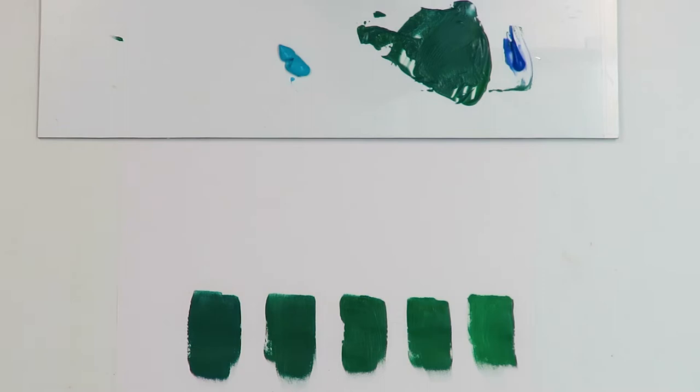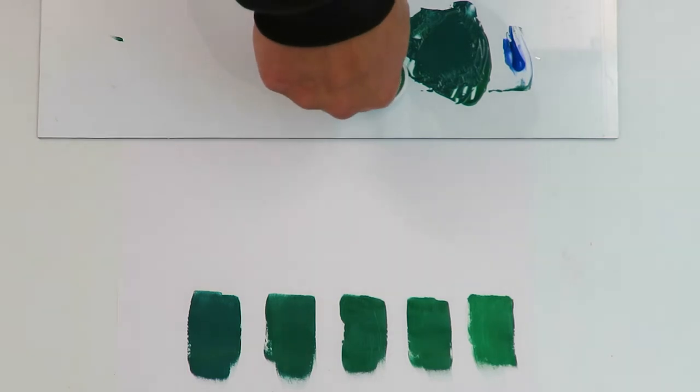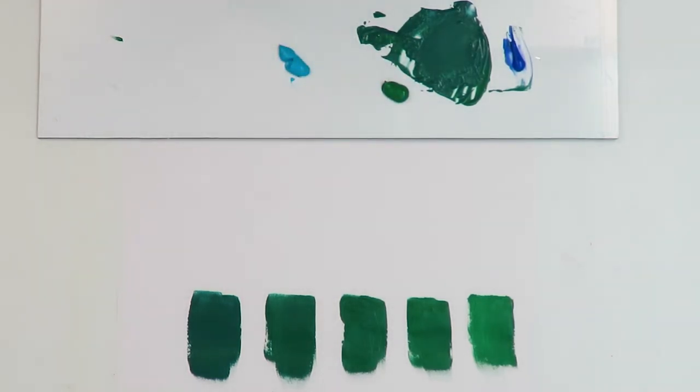Actually, what I'm going to do is I'm going to add some cobalt green here on the side here. And I'm going to add that to the turquoise instead. Okay. And just mix it up.